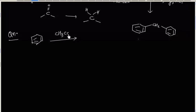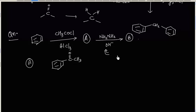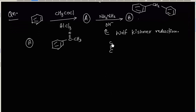Benzene is treated with CH3COCl in the presence of AlCl3, which gives product A. When A is treated with N2H4/OH- (alkaline hydrazine), this gives product B. We have to identify A and B. The first reaction is simply Friedel-Crafts acylation, so A will be acetophenone. The second reaction is Wolff-Kishner reduction, which again converts a C=O group to a CH2 group using alkaline hydrazine.